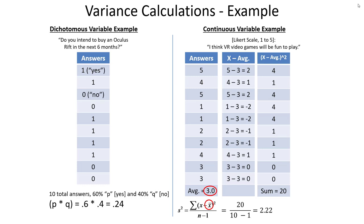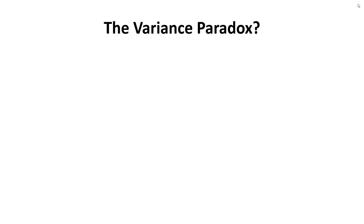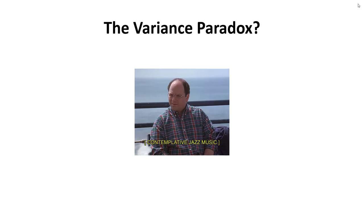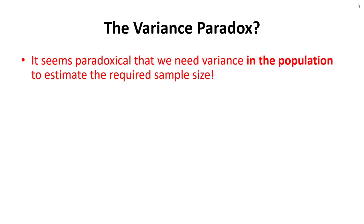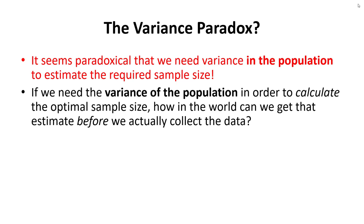Fortunately, in practice we rely on Excel or statistical software to calculate variance. Now, we're talking about variance in the context of determining the optimal sample size, and that reveals what I'm tempted to call the variance paradox. It seems paradoxical that we need the variance in the population to estimate our required sample size — but if we need that variance before we even collect data, how do we actually get that estimate? We don't have data yet; we're trying to figure out how much to collect.